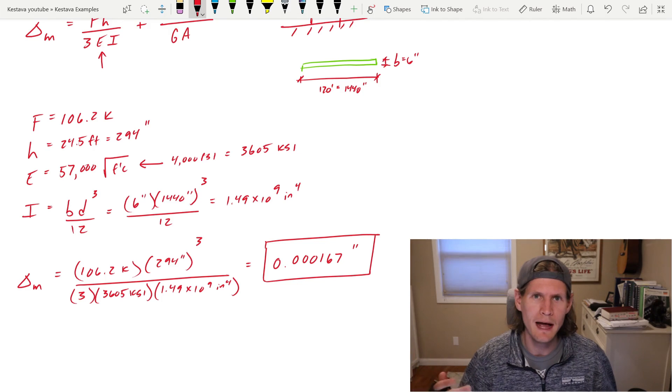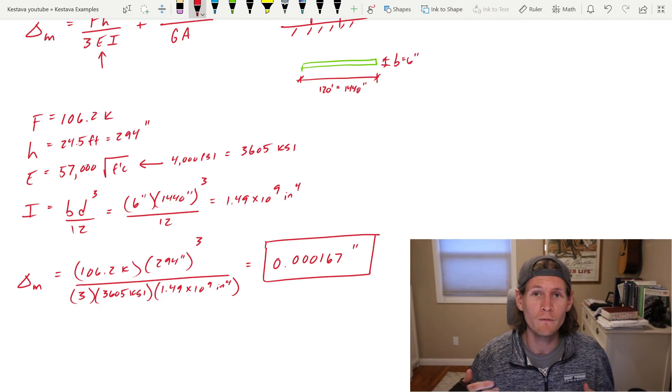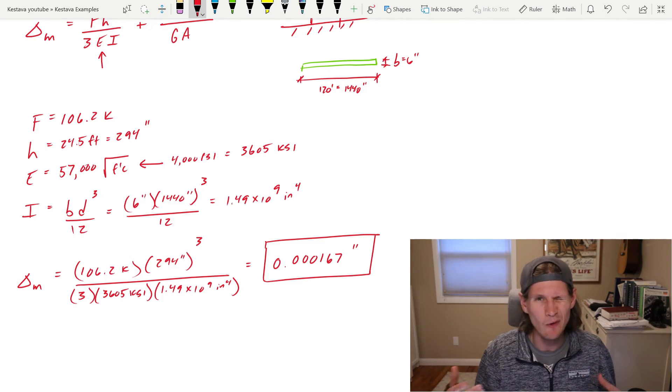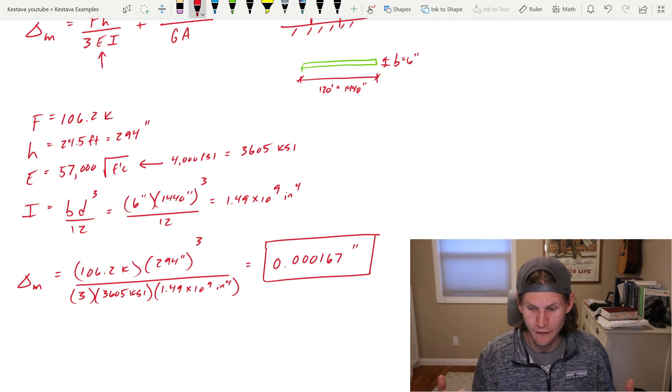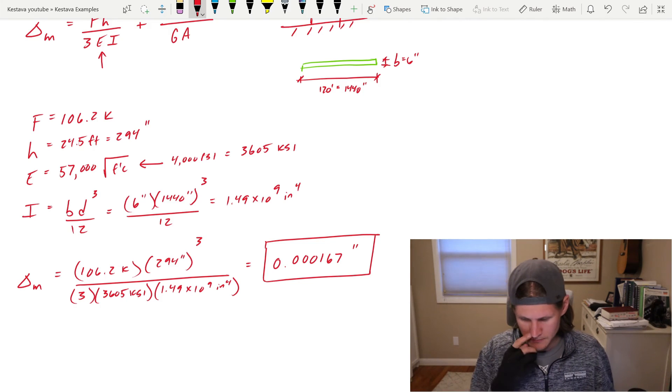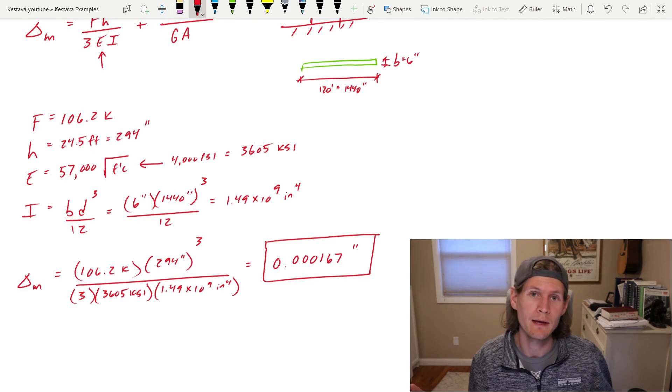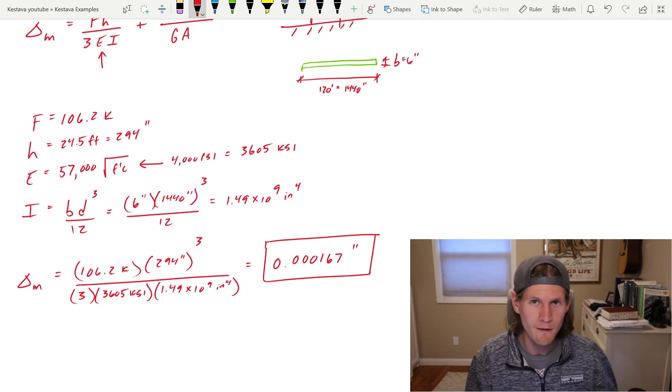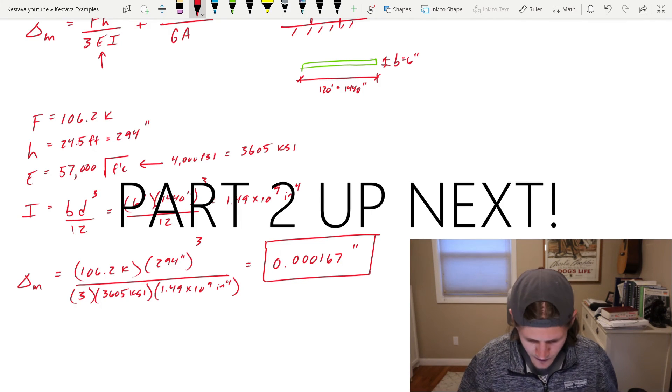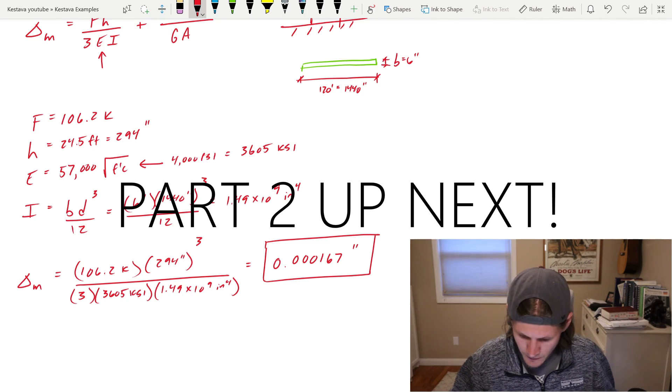But let's keep going. Just keep those things in the back of your mind as to kind of give yourself hopefully a little bit of confidence to say, am I going down the right path or is there a red flag? Like if you got a large drift, then maybe you're like, what the heck's going on? Maybe I missed a variable or a number. I didn't convert something right. But I know that looks very small, but let's keep going.